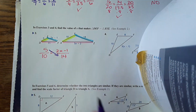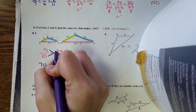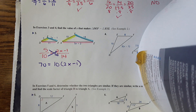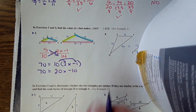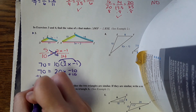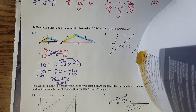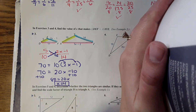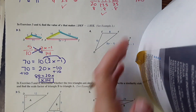From here, cross multiply: 5 times 14 is 70. Then write it like this and distribute. Problem 4 is the same type, so we'll skip that one and go to the next type of problem.